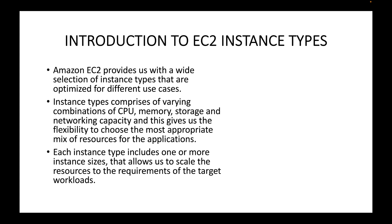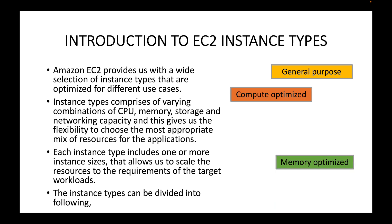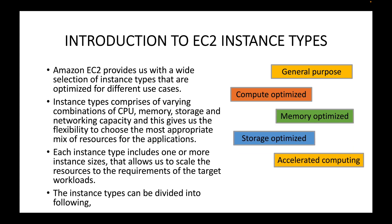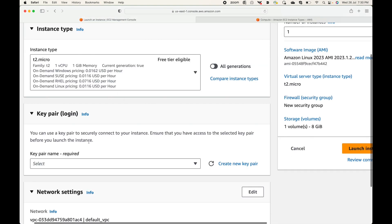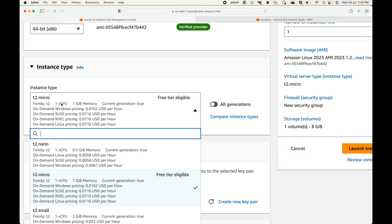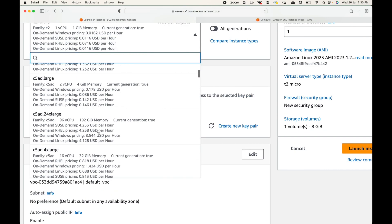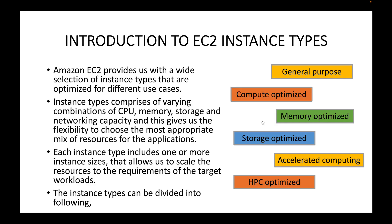Each instance type includes one or more instance sizes, allowing us to scale resources to the requirements of the target workload. These can be categorized into six types: general purpose, compute optimized, memory optimized, storage optimized, accelerated computing, and HPC optimized.